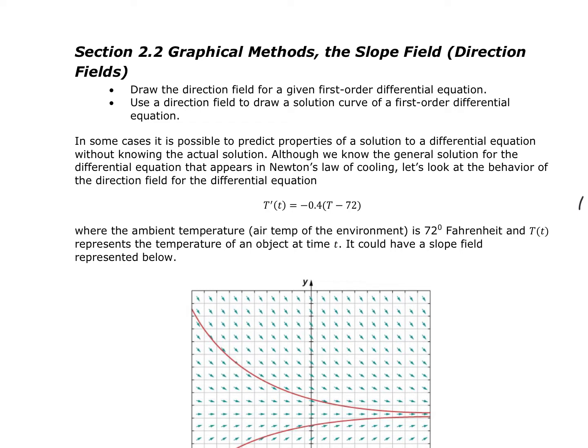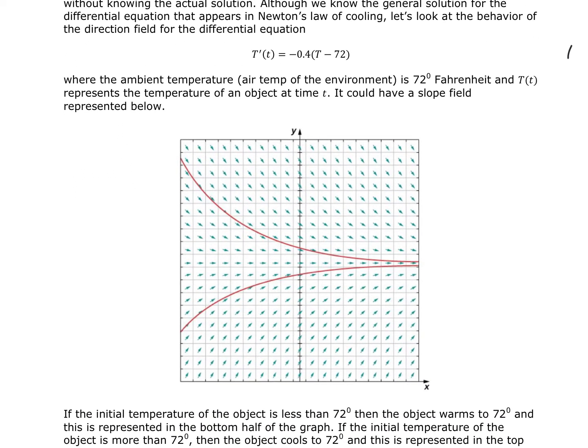In most cases, we can predict the properties of the solutions of a differential equation without actually knowing the solution. We know the general solution for differential equations can appear in Newton's Law of Cooling. Let's look at the behavior of the directional field of T prime of T equals negative 0.4 times (T minus 72 degrees). A slope field for this particular differential equation could look something like this below.